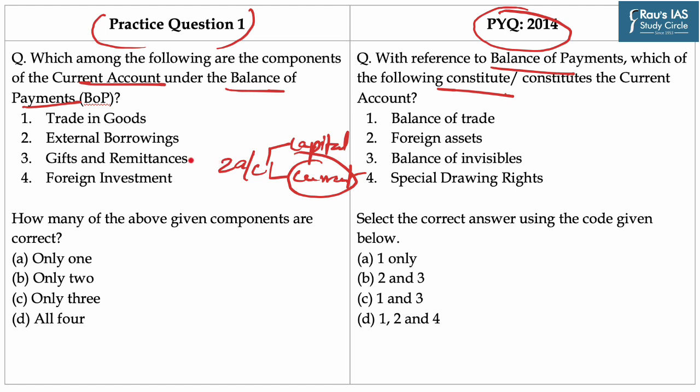The current account is the record of trade in goods and services in addition to transfer payments. Trade in goods includes exports and imports — hence component 1 is correct. Trade in services includes factor income and non-factor income transactions. Transfer payments are the receipts which residents of a country get for free, i.e. without providing any goods or services in return, and consist of gifts, remittances and grants given by governments or private citizens living abroad. Hence, gifts and remittance in the third point are correct.